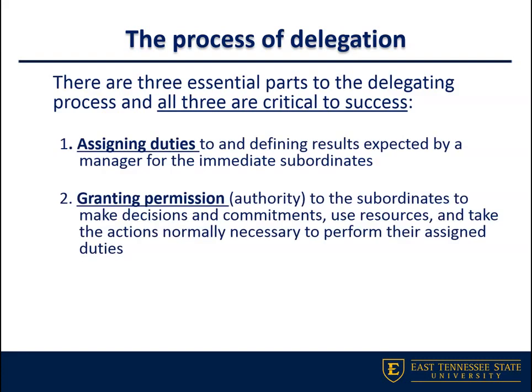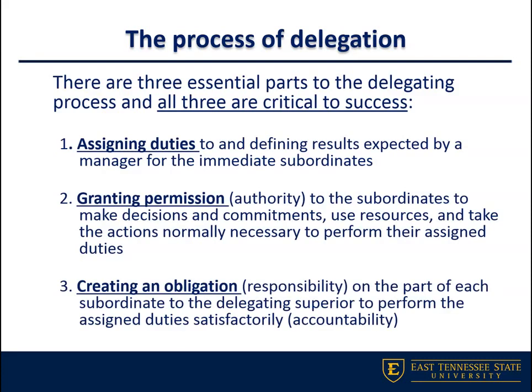There are actually process steps to delegating out authority. Here is an overview of the three critical steps. The first step is assigning duties — laying out what needs to be done, but not necessarily giving the person the 'how,' because we don't want to discourage their innovation or creativity. If we give out the how, we start to work ourselves into micromanagement, which we talked about a couple of lectures ago.